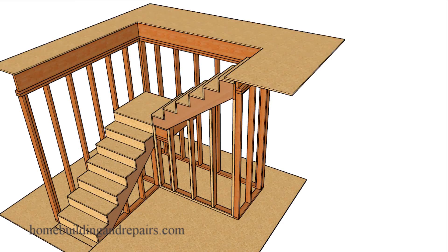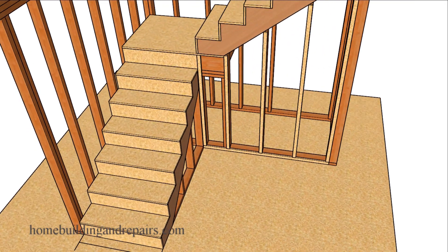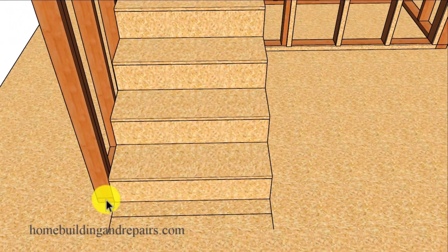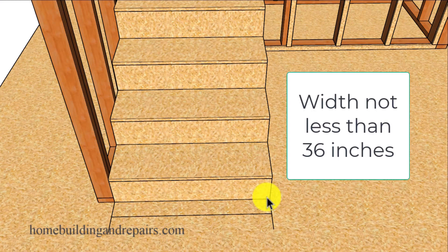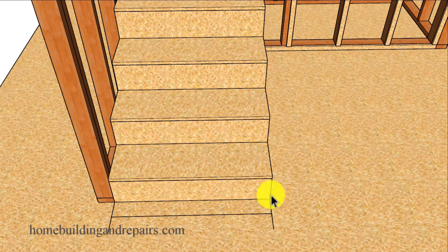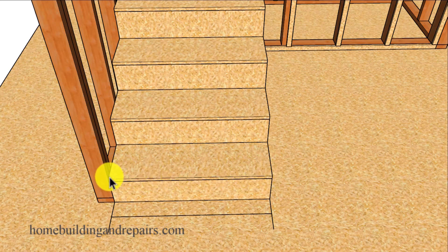In this video I will provide you with the top five stair building codes that you will need to be aware of when building a set of stairs with a landing. The first one on the list will be the minimum width of the stairway, and that will be 36 inches — after everything is finished, after the drywall has been installed, and after any wood trim has been installed. So if you have a stairway going between two walls, you'll want to allow for anything you're adding to those walls, like drywall, wood trim, or skirt board.